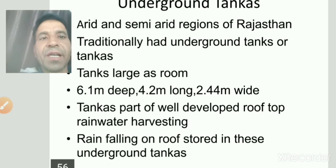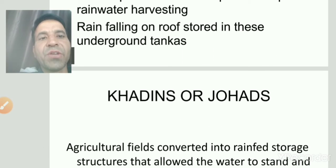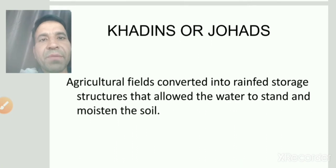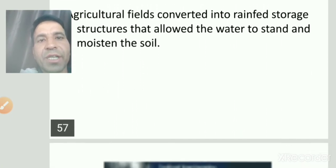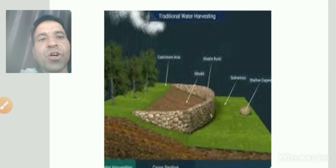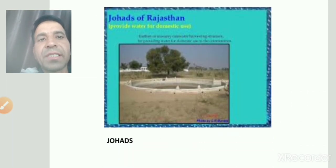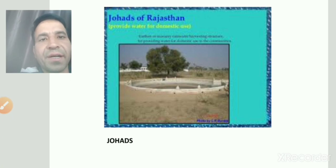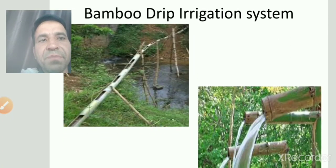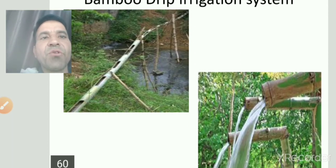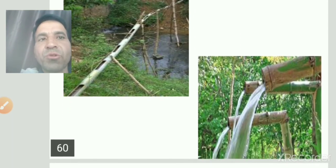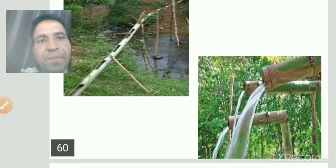Arid और semi-arid areas यानी Rajasthan में tanks के माध्यम से different ways से water store होता है। Rajasthan में खडीन और जोहड होते हैं — खडीन generally जैसलमेर में किया जाता है, और जोहड भी Rajasthan की rainwater harvesting का तरीका है। इसके अलावा bamboo drip irrigation system — bamboo से channels बनाकर pipes की जगह bamboo use करके irrigation की जाती है।